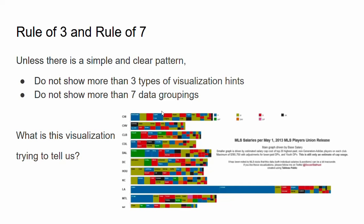The reason this chart fails is first, it has much more than seven data groups. Second, it uses color, size, and position — much more than three types of visualization hints. That's why it becomes confusing and people cannot get what it really means.